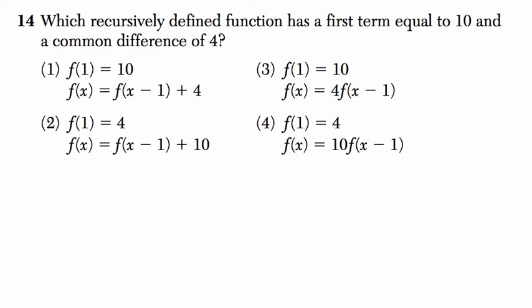Now I'll explain these questions in two ways. First thing to notice is that when you have f of 1, that's like your first term. So the first term equals 10. It can't be choice 4 or 2, because those first terms both equal 4. It's got to be choice 1 or 3.